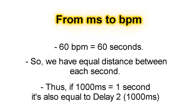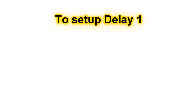Basically, we would take a metronome at 60 BPM and tap that on the tap tempo of our delay to get the milliseconds needed for our second delay. Setting up delay 1 is a little more complicated because we don't have a round number like 1000 milliseconds, so we have to use a formula.